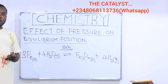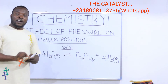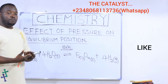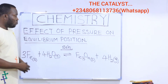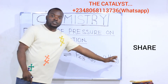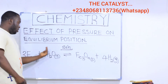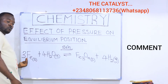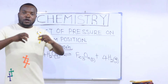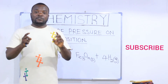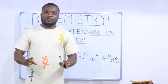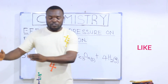Any time you are asked to predict the direction of equilibrium position, you are simply being asked to tell us whether the equilibrium position will shift to the right-hand side, which we call the forward direction, or the backward reaction, which is the left-hand side. The effect of pressure on equilibrium depends on one thing: the number of moles of gases present on both sides of the reaction.